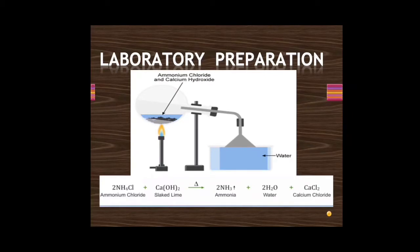The lab preparation method uses ammonium chloride along with slaked lime, which is heated to give ammonia gas, water, and calcium chloride. The chemical reaction is shown on your screen. The apparatus uses a round bottom flask kept tilted — it is kept tilted because we do not want any moisture or water vapor to rise up and fall back into the flask.